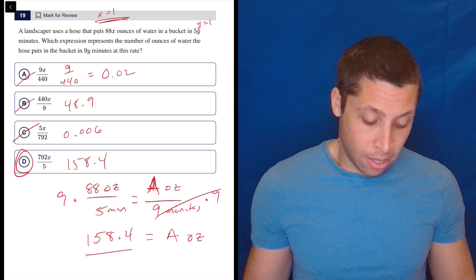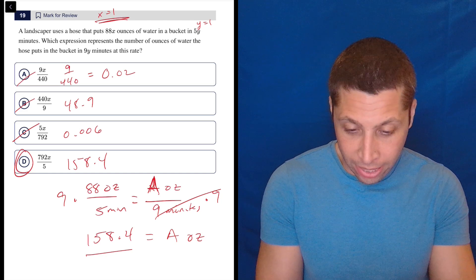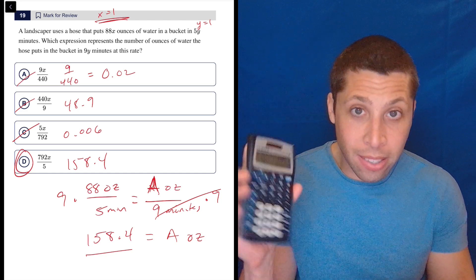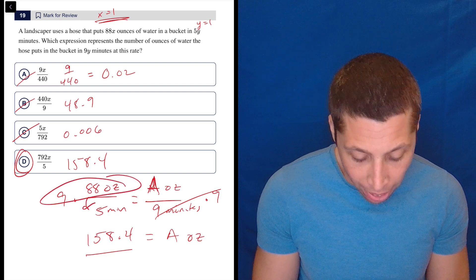Done. That's it. So could you have done this without that? Yes, because at the end of the day, 88 times 9 is 792. So it makes sense that I would have 792 on the top divided by 5 on the bottom.